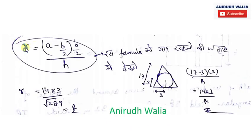Small r is the inradius. The formula is a minus b by 2 into b by 2 divided by H. It is called inradius, the circle inscribed inside the triangle.